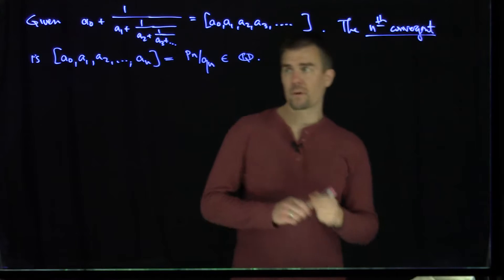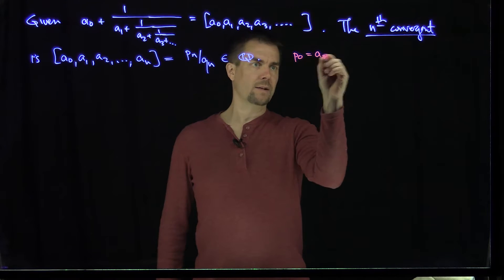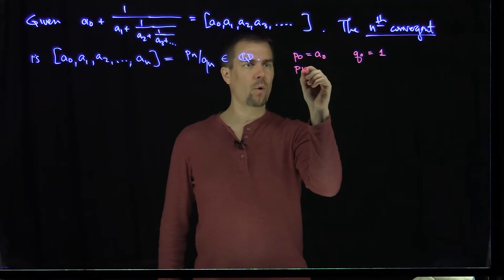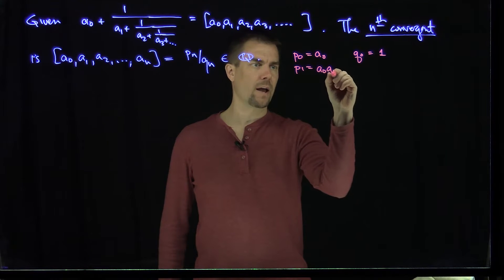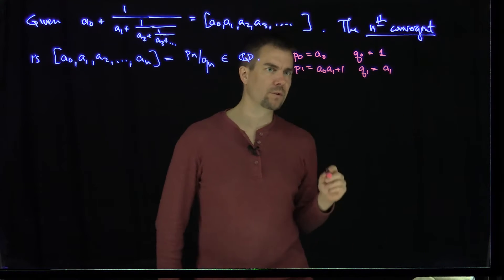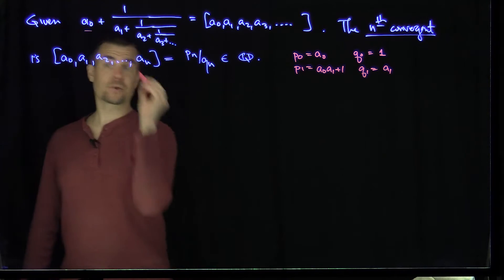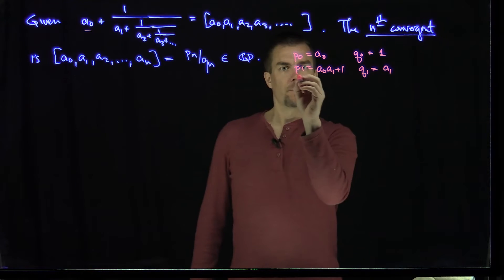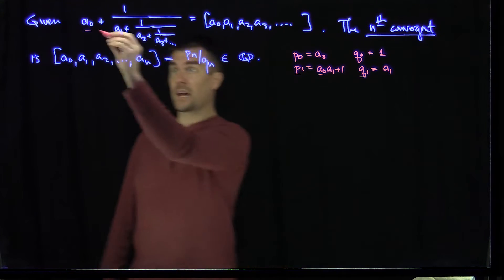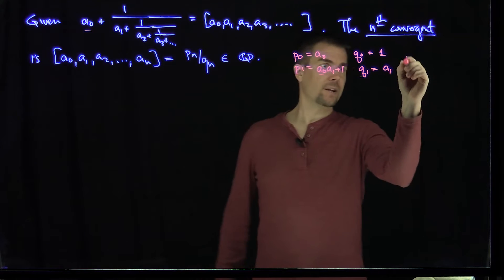What we're going to do is write down a formula for pn and qn. So p0 is simply a0 and q0 equals 1. Then p1 equals a0·a1 plus 1, and q1 equals a1. Let's check: p0 over q0 gives a0, and p1 over q1 gives a0 plus 1 over a1, which is exactly what we see. So these are the base cases.